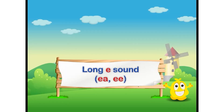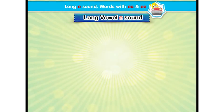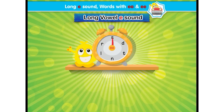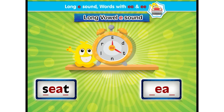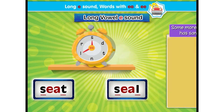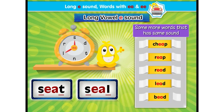Long E sound. Now let's learn long vowel E sound. Look at the clock — it is making a sound: tick, tick, tick, tick. It is making words. See how: S-I-T becomes seat. S-E-A-L becomes seal. Some more words that have the same sound: cheep, reap, read, lead, bead.